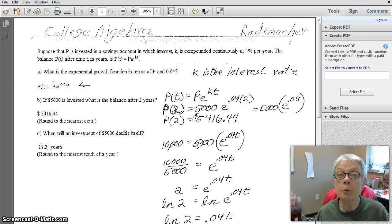Here's a problem from your homework. Suppose that P is invested in a savings account in which interest K is compounded continuously at 4% per year. The balance P of T, that is P is a function of T, after time T in years is P(T) equals P times e to the kT. You have continuous compounding.